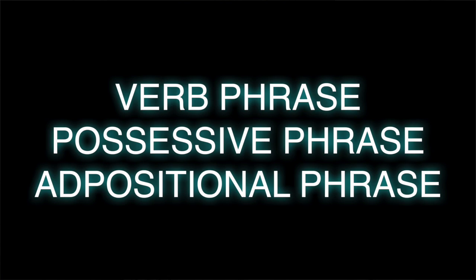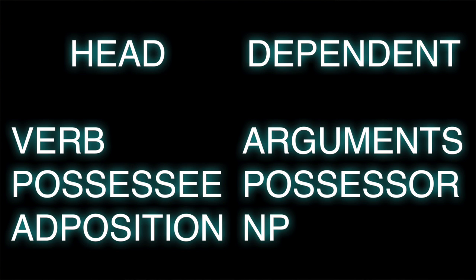Headmarking may sound really fancy and complicated, but it really, really isn't. It's actually pretty simple. Basically, if you follow phrasal grammar, there is a part of a phrase that's going to be the most important part, and that's the head. We're going to focus on three structures right now: verb phrases, possessive phrases, and adpositional phrases. In each of these, you have a head element and a dependent element.